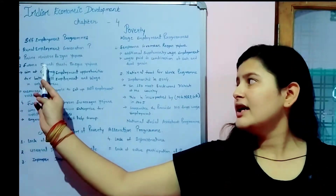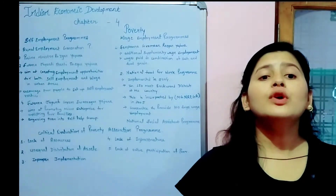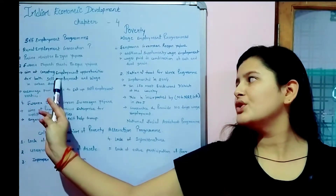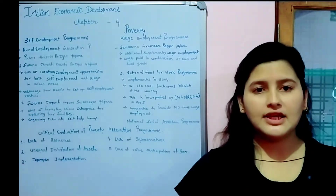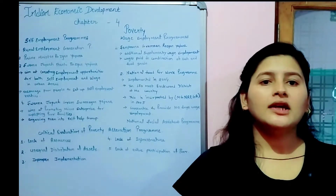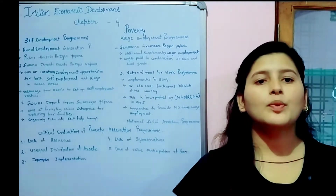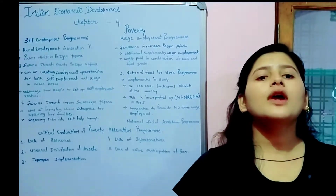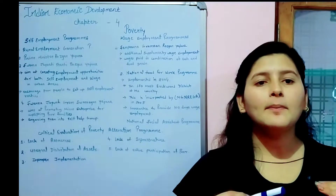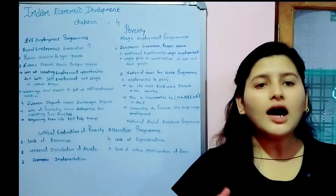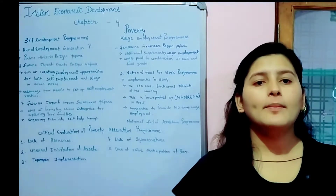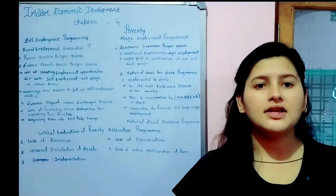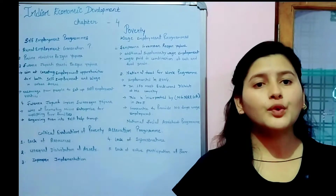Let's see the Swarnajayanti Shahari Rozgar Yojana. This scheme aims at creating employment opportunities for both self-employment and wage employment in the rural area. Its aim was to provide self-employment opportunities as well as wage employment opportunities. Its main aim and intention is to encourage and inculcate people to have some of their own work.